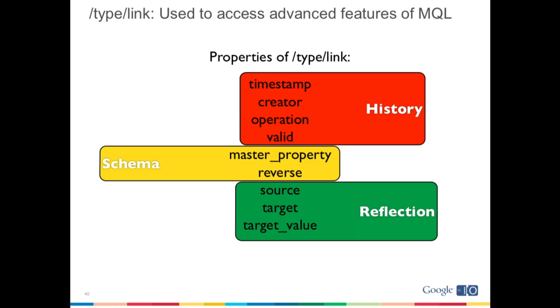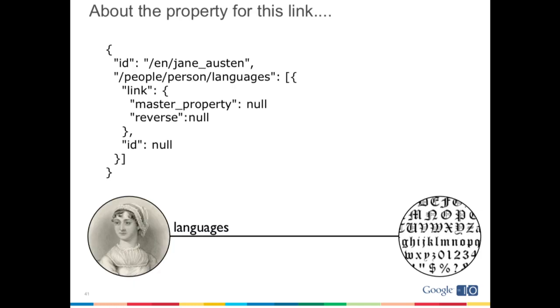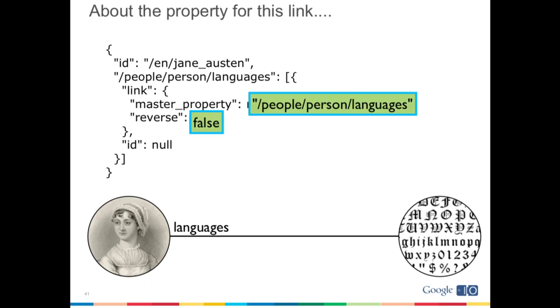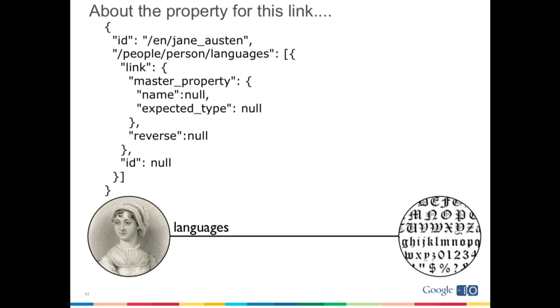Now we can look at schema through the link directive. Starting with Jane Austen and looking at the languages link, we can ask about the master_property for this link and whether it's the reverse. What we get back is that it's not the reverse, and the master_property is /people/person/languages. If I were building an application, I could open up this link and get out the display name of that property as well as learn about the type I should find at the other end — all in one package. I get back that the display name for this link is 'languages' and the thing at the other end is a human language.